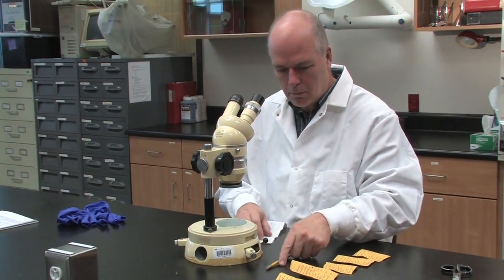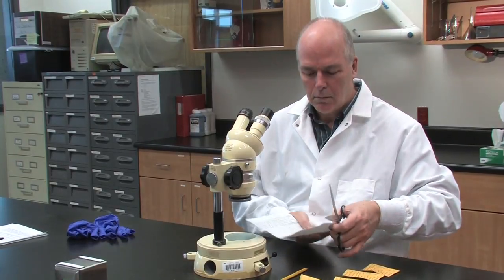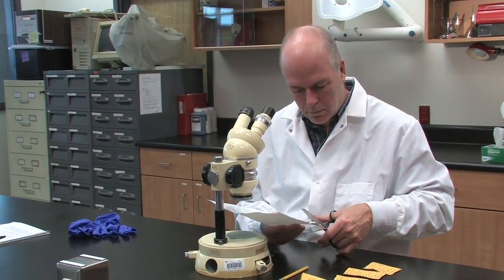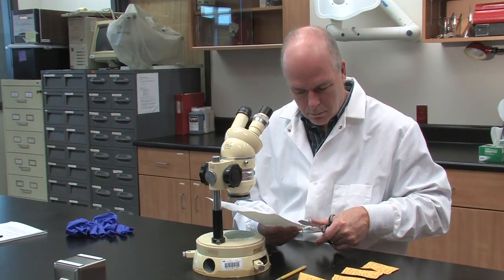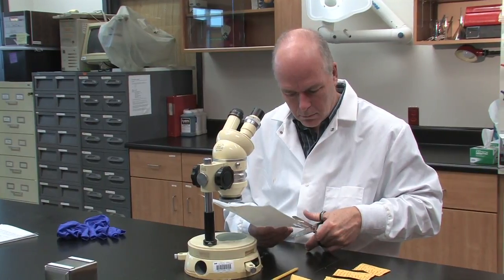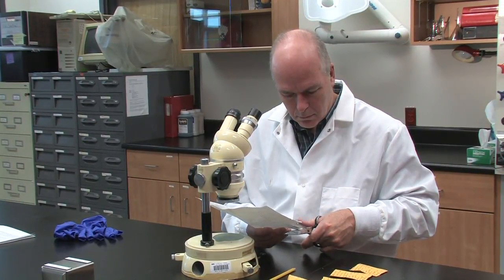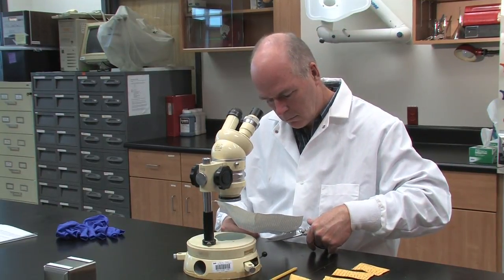When the cores are marked, make a label for each otolith. This can be done in Excel or simply written on a strip of paper. Include species and an identifier such as the sample number. Then you can simply cut the labels which will be used in the wells once the epoxy hardens.